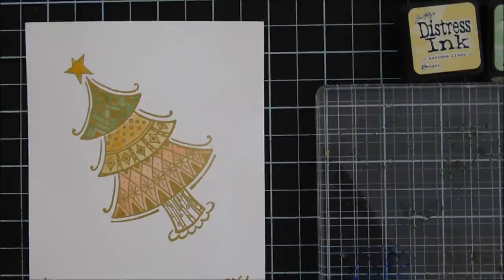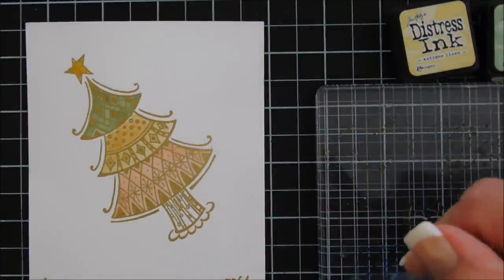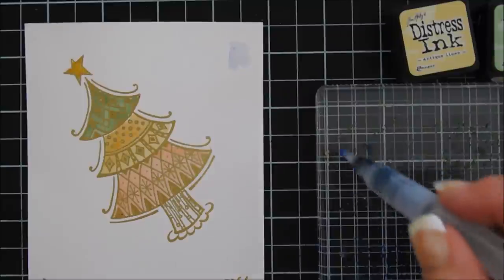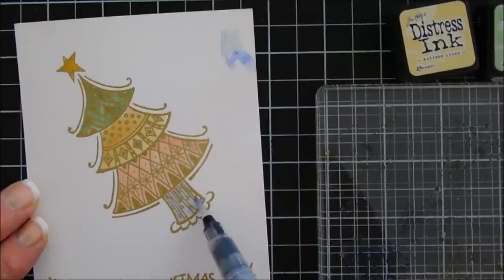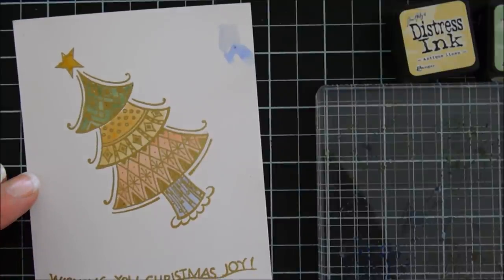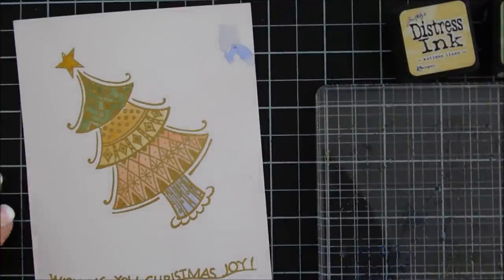Now for the tree trunk, you could completely use your brown if you wanted to. But I'm going to go outside the box and use my shaded lilac. We're going to have a purple tree trunk. I'm wiping it off really good because I didn't want to transfer any of that. I think purple and that orangey color would probably make a muddy mess. But I'm going to add my shaded lilac to the tree trunk. And then for the little tree skirt on the very bottom, I'm actually keeping the shaded lilac and then I'm mixing it with the bundled sage. So I'm getting a bluey greeny color. And then we're going to just add that to the skirt area.